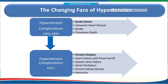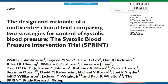The way this disease presents has been changing. Until 2000, complications were mostly acute events like ischemic heart disease, stroke, or premature death. In recent years, chronic diseases have become more prominent — like systolic or diastolic heart failure, chronic kidney disease, dementia, and atrial fibrillation.